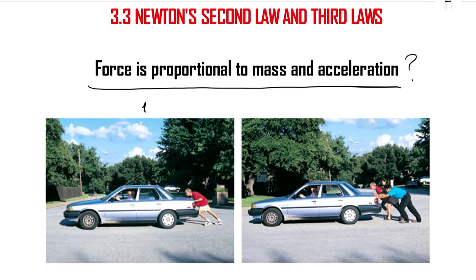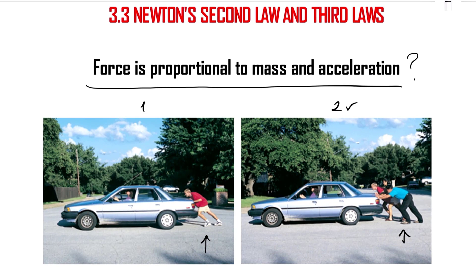Let's look at the first picture and the second picture. In the first picture we have one car and one guy trying to push it. In the second picture we have one car and three guys trying to push it. So which one can push the car faster? Of course the second one, because we have more people, meaning more force, so the car can move faster — this shows the relation between force and acceleration.